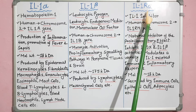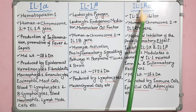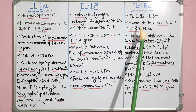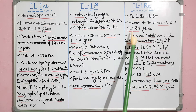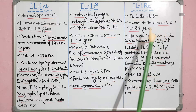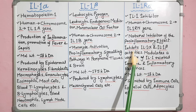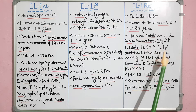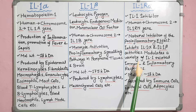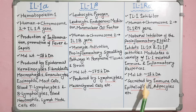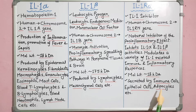Interleukin-1 receptor antagonist or IL-1RA was initially called IL-1 inhibitor. In humans, it is encoded by the IL-1RN gene of chromosome 2. It is a natural inhibitor of the pro-inflammatory effect. It inhibits the activities of IL-1 alpha and IL-1 beta, and modulates a variety of IL-1-related immune and inflammatory responses. Molecular weight is about 18 kilodalton. It is secreted by various types of cells including immune cells, epithelial cells, adipocytes, etc.